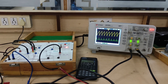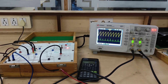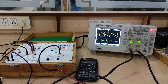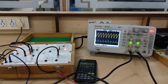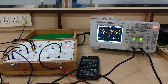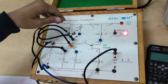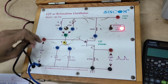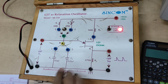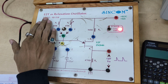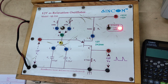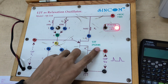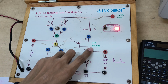Hello and welcome to Electronic Devices and Circuits Laboratory. In this video tutorial, we will see the experiment related to UJT as a relaxation oscillator. This is the kit which we will be using for this experiment. We have a kit for UJT as a relaxation oscillator, and the UJT 2N2646 is used as a relaxation oscillator.